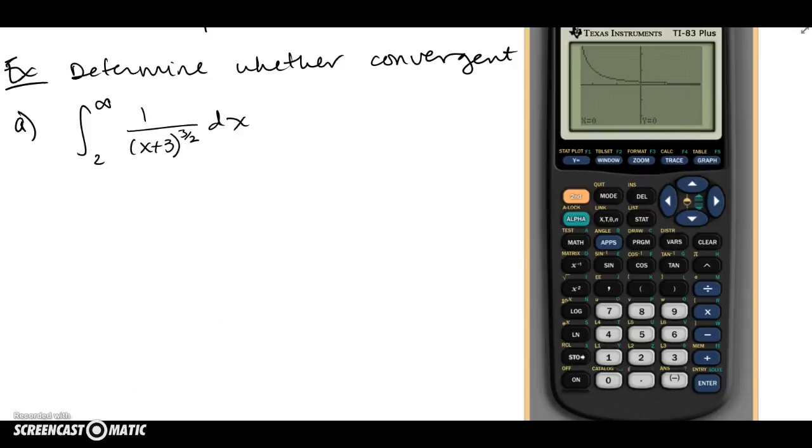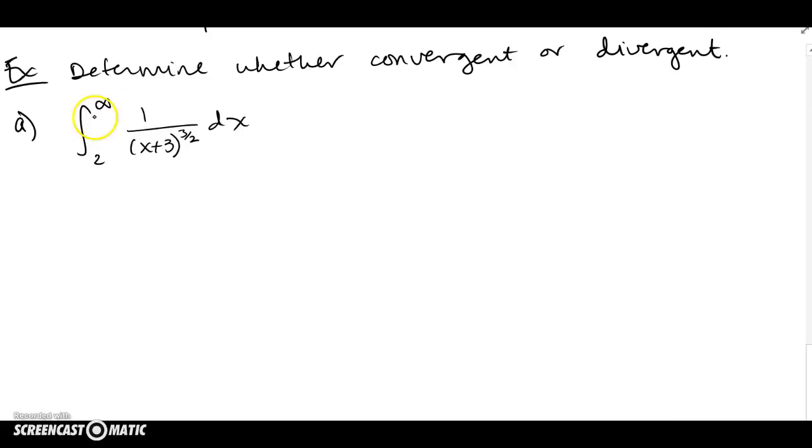So we'll go and replace this guy that I call trouble point, which is really not a trouble point, but infinity makes it improper. We're going to replace it with t and look at limits. Don't forget to put the limit as t goes to infinity.